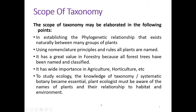The next point is the scope of taxonomy. Taxonomy is related to each and every branch of botany. Its scope includes establishing the phylogenetic relationships that exist naturally between many groups of plants. Using nomenclature principles and rules, all plants are named — this binomial nomenclature system follows rules and regulations according to the ICBN, the International Code of Botanical Nomenclature. It has great value in forestry, agriculture, horticulture, etc. In the study of ecology, knowledge of taxonomy and systematic botany becomes essential, as plant ecologists must be aware of the names of plants and their relationships to habitat and the environment.